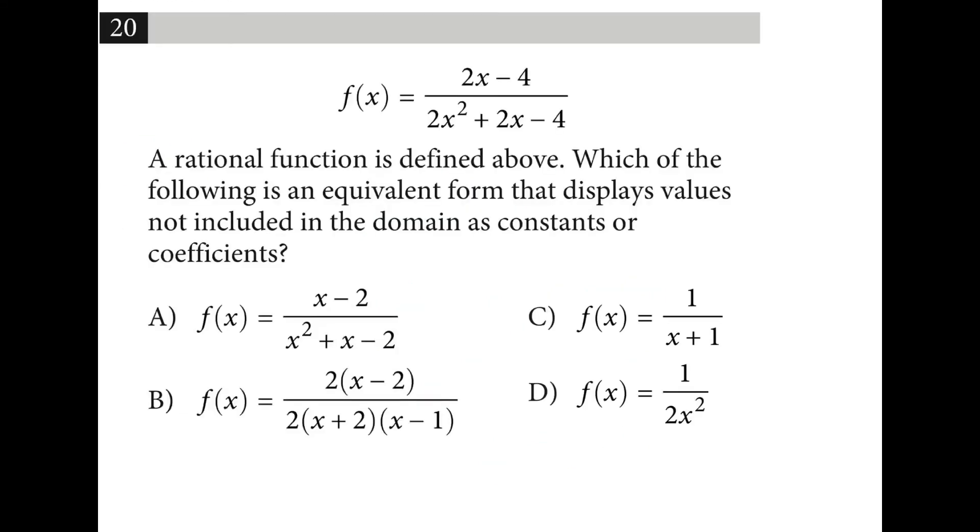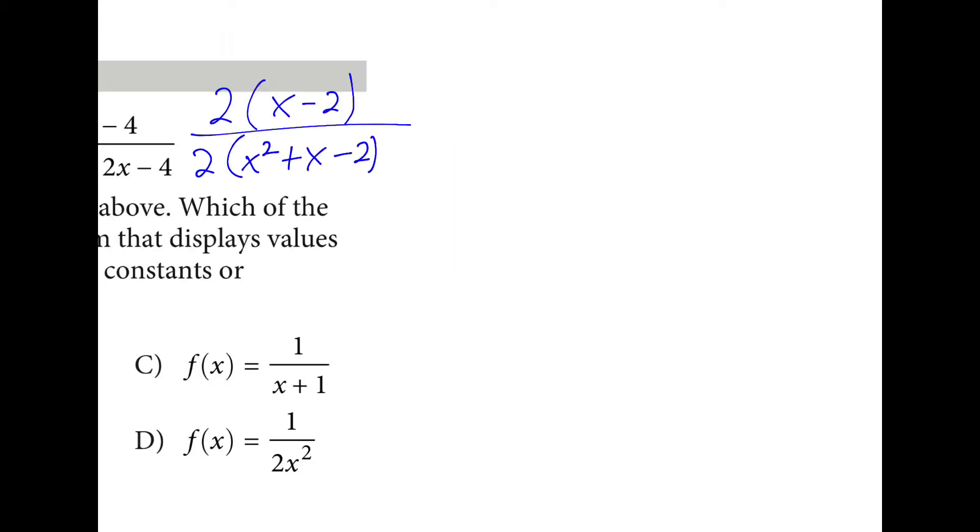So first I'll factor a two out of the top. This gives me two times x minus two. And I'm guessing then I'll try to factor x minus two out of this one. But first there's a two to factor out, so x squared plus x minus two. Then I can rewrite this bottom equation as x plus two times x minus one.